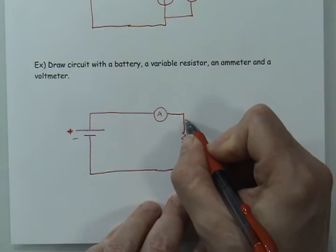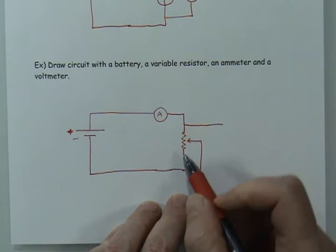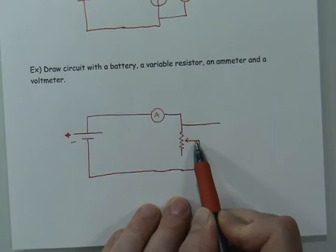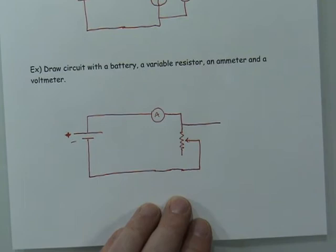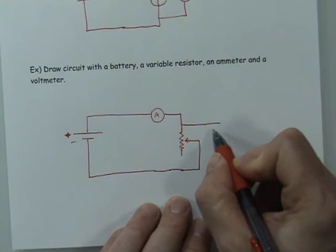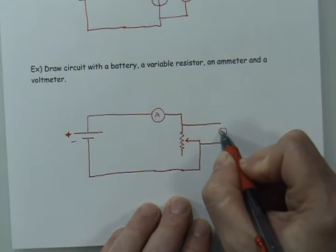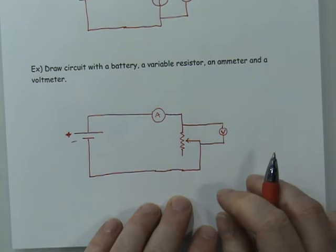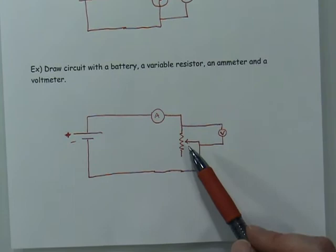I could connect on either end, but I want to connect to this portion. The current comes in and then leaves through the middle connector, so there's no current flowing through the unused part of the resistor — nothing is happening in that section. So I'll connect the voltmeter to the point before the variable resistor and then connect it to the point right after the current leaves the variable resistor to complete the circuit.